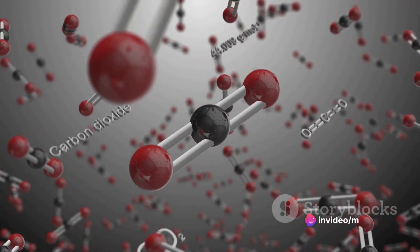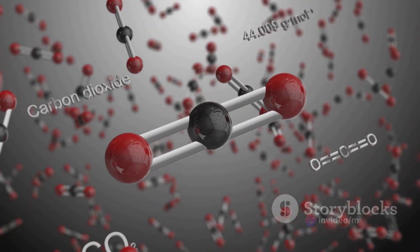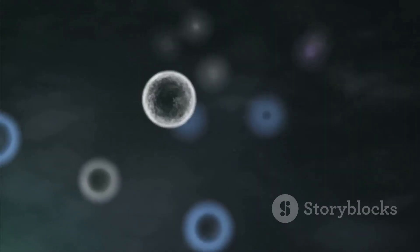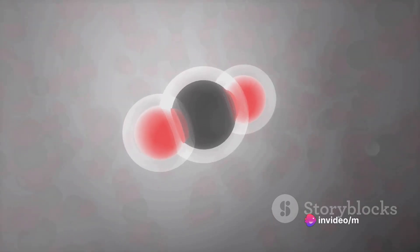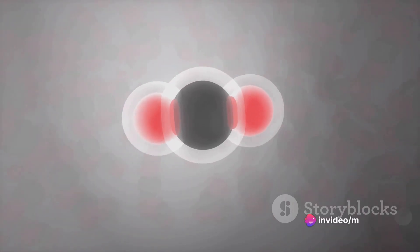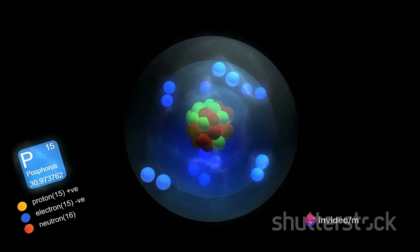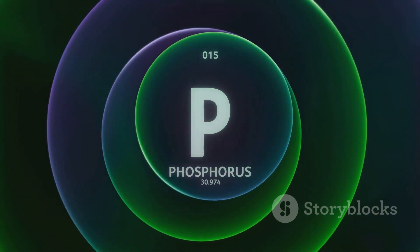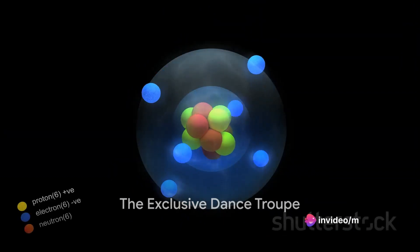But the dance formations aren't always a couple's waltz. The number of atoms in a molecule of an element can vary. For instance, oxygen atoms usually pair up to dance, forming O2. But under special conditions, they can form a triad resulting in ozone, or O3. Nitrogen gas, or N2, is another common example of a paired dance. Yet some elements, like phosphorus, prefer a grander spectacle, forming complex structures with several atoms linked together.